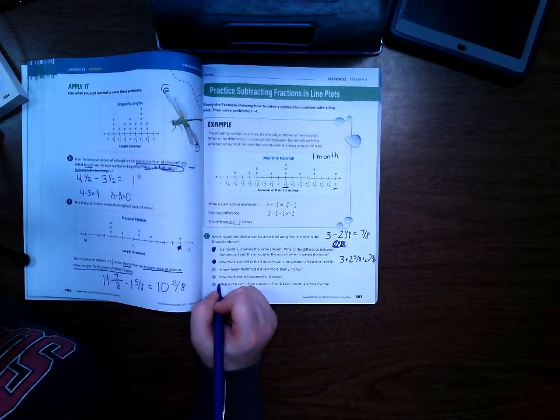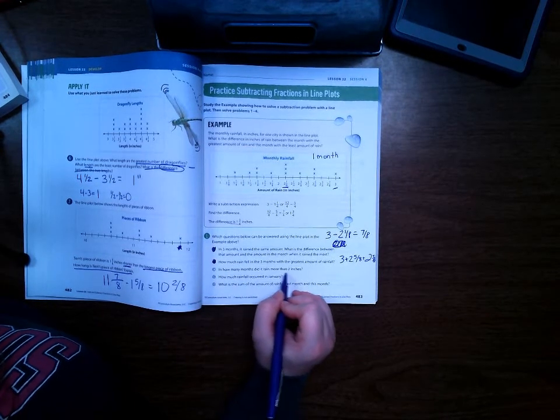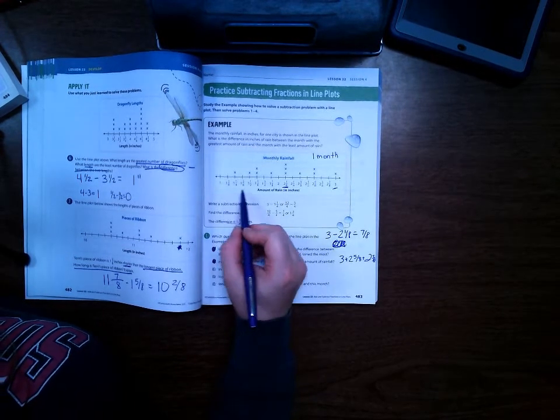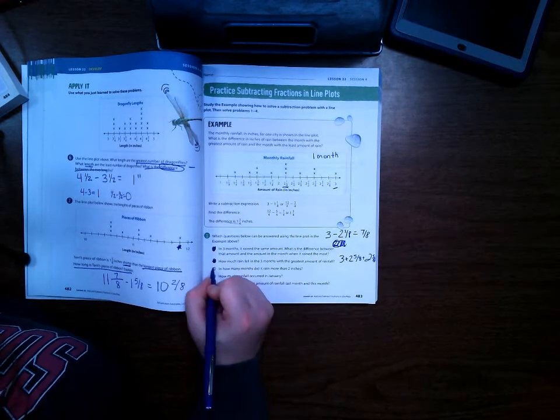C, count the number of x's placed above amounts. In how many months did it rain more than 2 inches? So find 2, 1, 2, 3, 4, 5, 6, 7 months. So yes, we can answer that one.